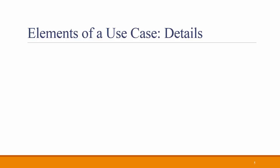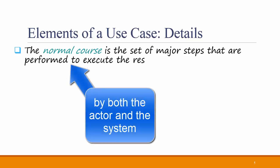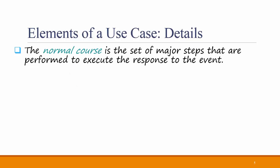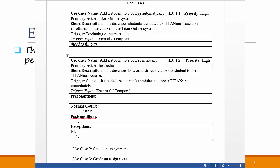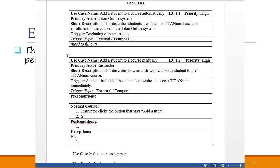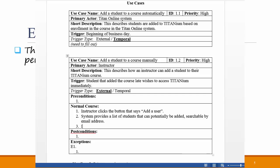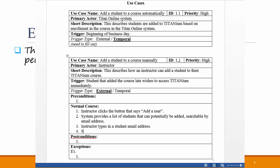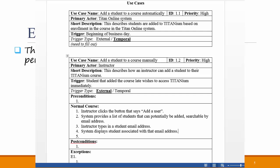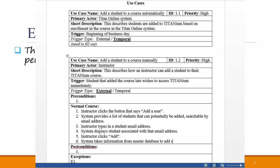Let's talk about some of the more detailed information included in a use case. The normal course is the set of major steps that are performed to execute the response to the event. Going back to our Titanium example, if an instructor wanted to add a student to a course, there are several steps that must be taken. First, the user must click the button that says Add a User. Then the system must supply a set of potential users to add to the course. Then the instructor can select a student and click the Add button. Then the system does some behind-the-scenes steps to add that user to the roster.